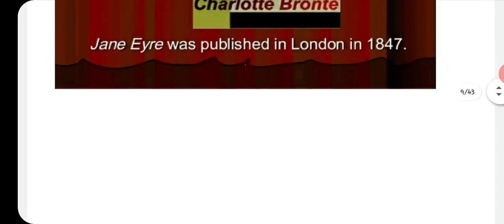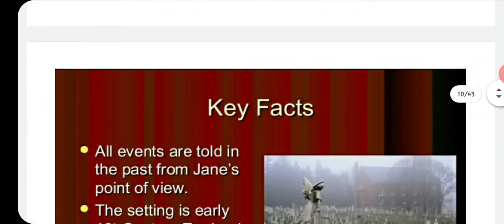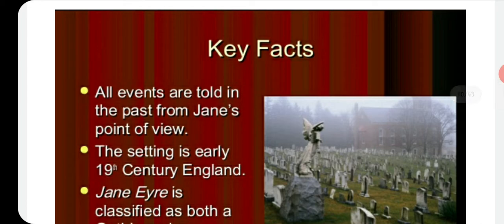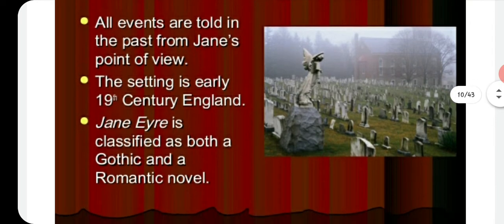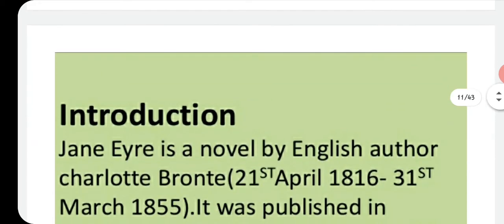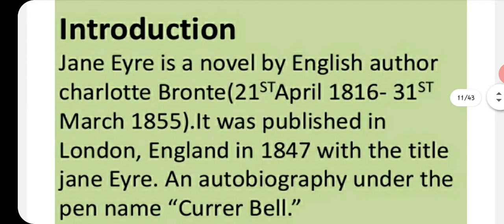Jane Eyre was published in London in 1847. Looking at the key facts: all the events are told in the past tense from a first-person point of view. The setting is early 19th century England, and Jane Eyre is classified as both a gothic and a romantic novel, containing several gothic elements.